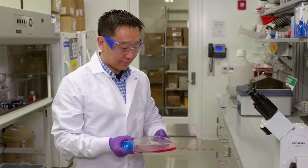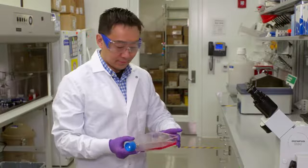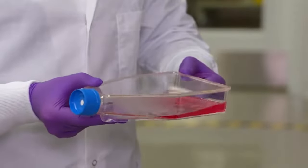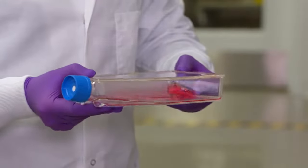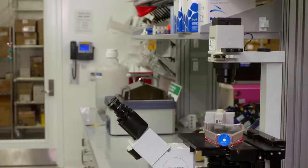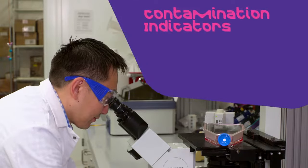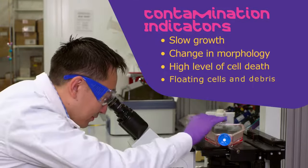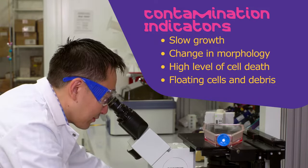Now let's switch gears and talk about contamination. Gross contamination can be easily checked by looking at the flask — media should not appear turbid or cloudy. In addition, media should not exhibit rapid color change to yellow, which would indicate the presence of rapidly growing bacterial contamination. Additional signs of contamination can also be checked under the microscope, including slow growth, change in morphology, unusually high level of cell deaths, and floating cells and debris.